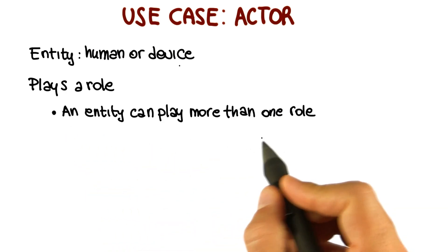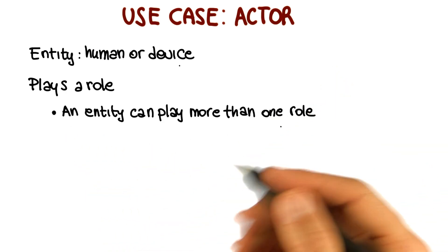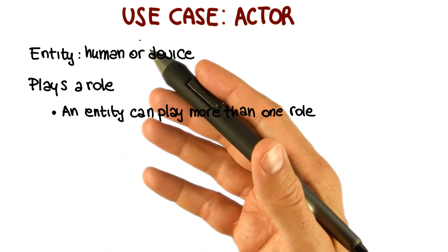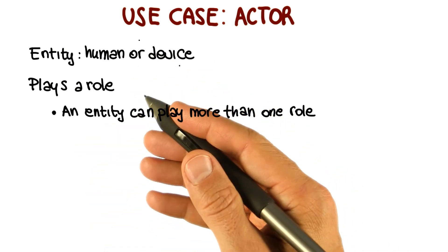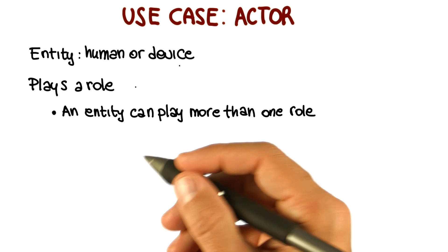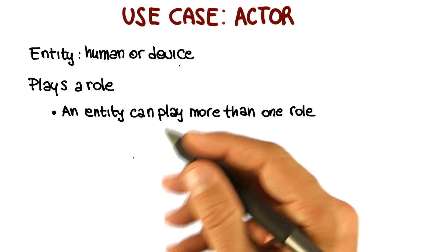It is important to clarify that an entity can play more than one role. For example, you might have somebody working in a bank that can be both an employee of the bank or a customer of the bank, depending on how it interacts with the banking system.